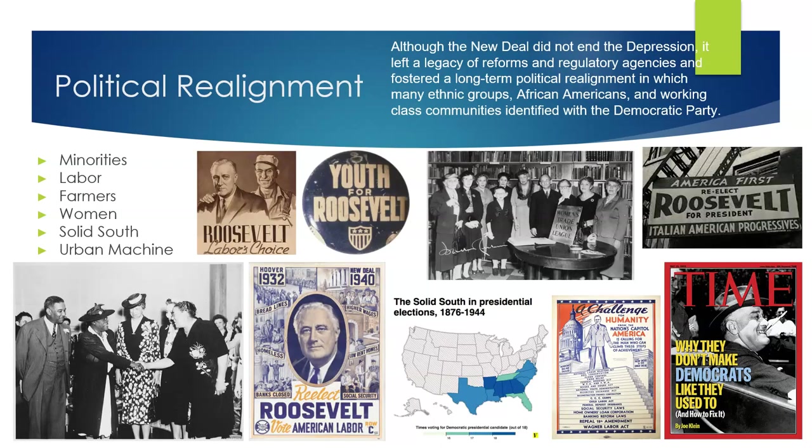While the New Deal did not completely alleviate the Depression, it did have a significant impact, both positive and negative. Under the New Deal, unemployment initially declined, but there was a notable spike in 1937 and 1938 due to a slowdown in government spending and the impact of Social Security taxes on income. Discrimination also marked aspects of the New Deal. The Civilian Conservation Corps initially had segregated housing, while the Federal Housing Authority, which insured mortgages, allowed discrimination when determining eligibility. Discriminatory practices, including color-coded maps indicating risk levels, further disadvantaged Black Americans and minorities in housing opportunities.